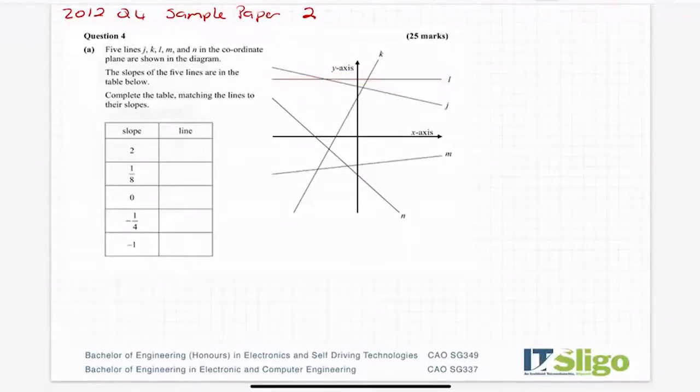So although we don't know the equations of the lines, although we don't know any points on them, we can compare their slopes relative to each other. When I look down here now I see a slope of zero. Well, there's only one of those lines that's flat with a slope of zero and that's L.